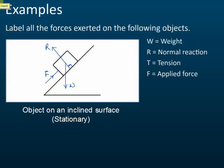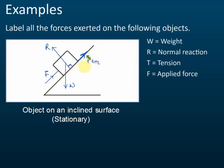If you want to include friction, that is also acceptable. You can say there's friction acting on the object. If you don't include friction, then you say there's an applied force pushing the object upwards. So the forces are: weight acting vertically downwards, normal reaction at 90 degrees to the surface, and a pushing force or friction.